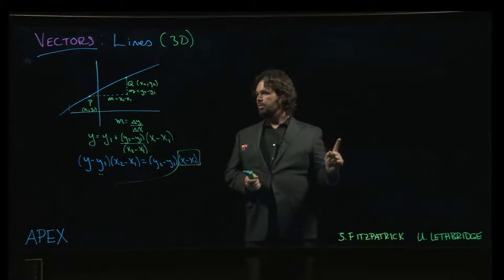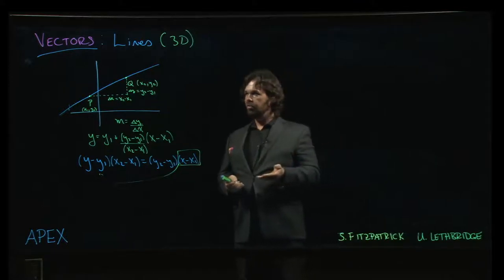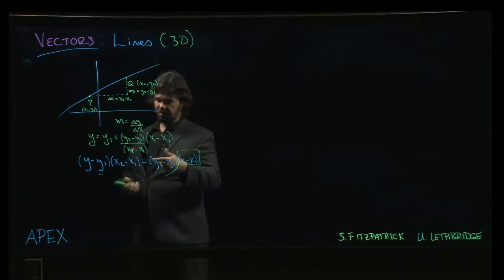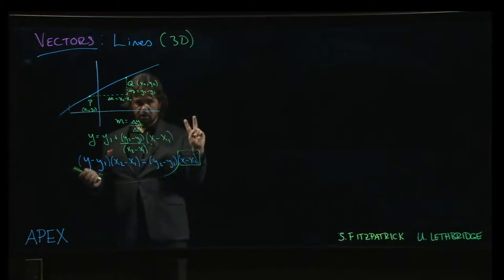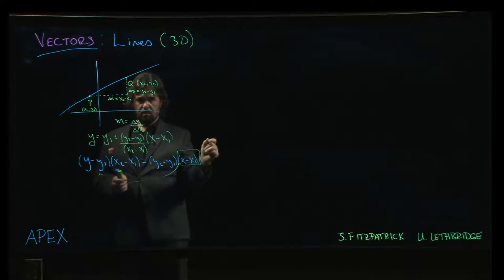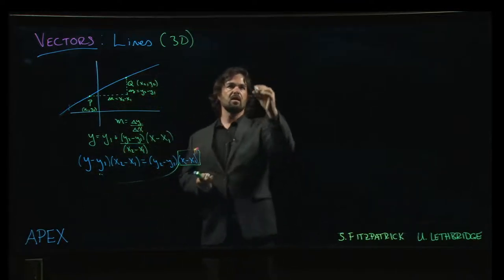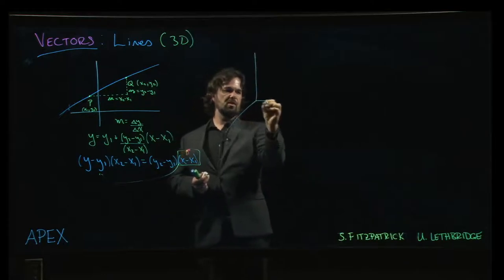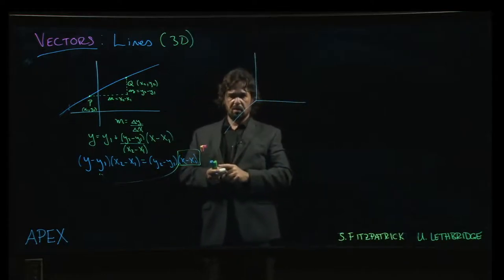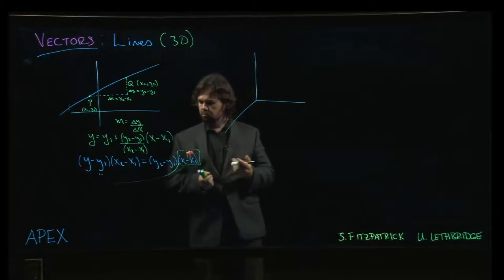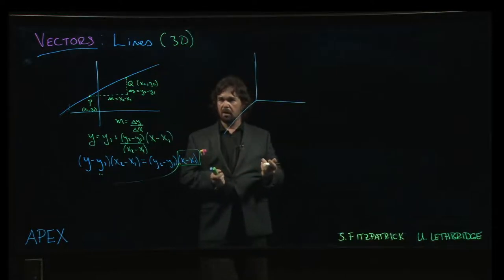The trouble with extending this to three dimensions is slope is inherently a relationship between a pair of variables, delta y over delta x. But we have three variables once we move into space. And giving a relationship between any two of those three variables, well, that's not going to cut it.